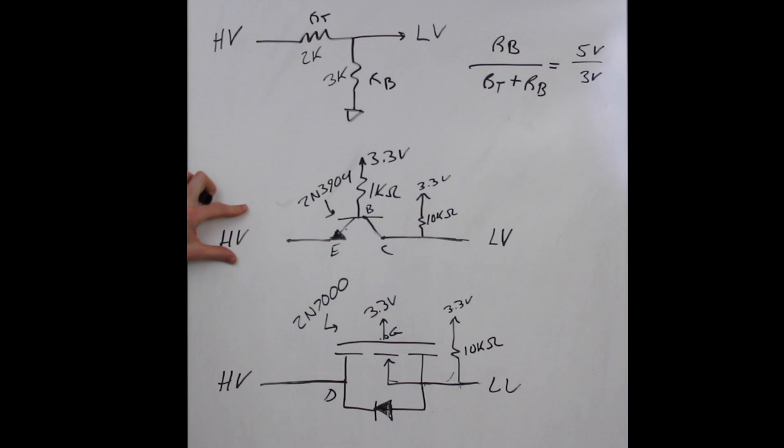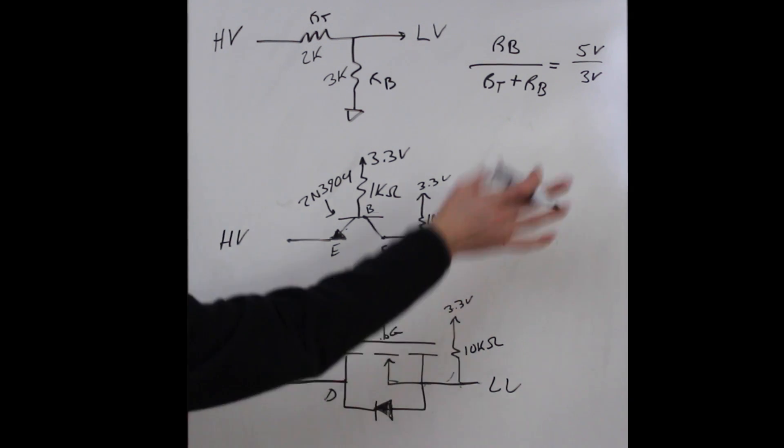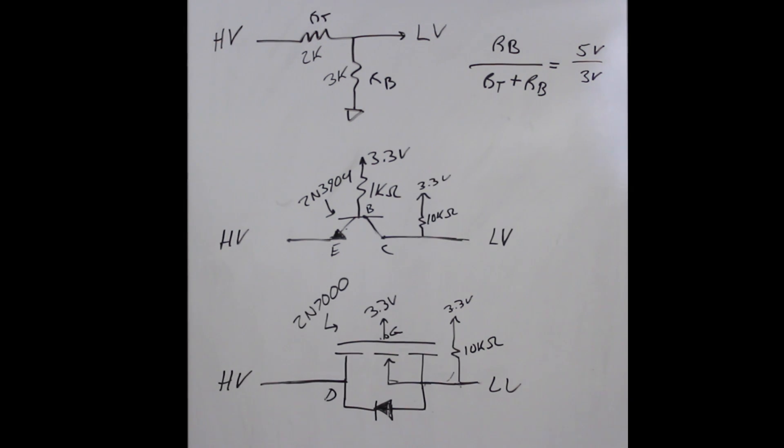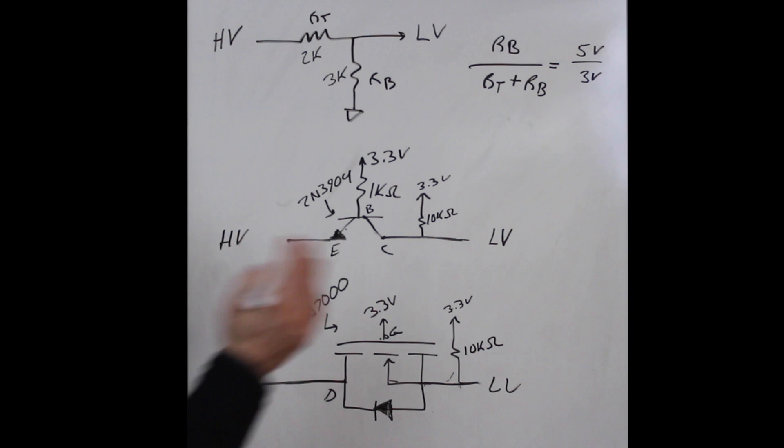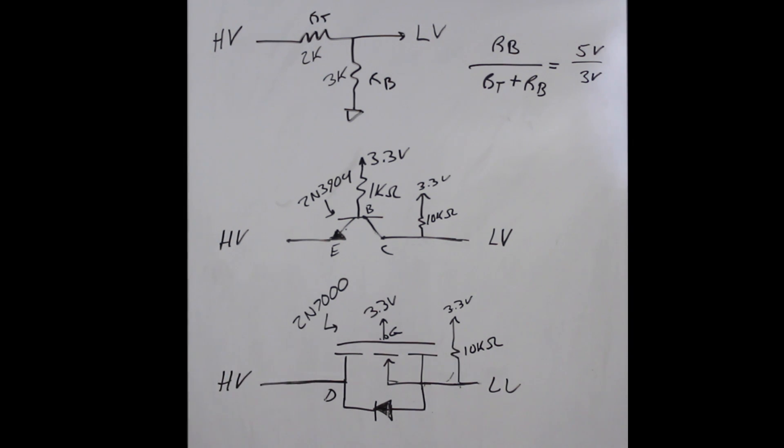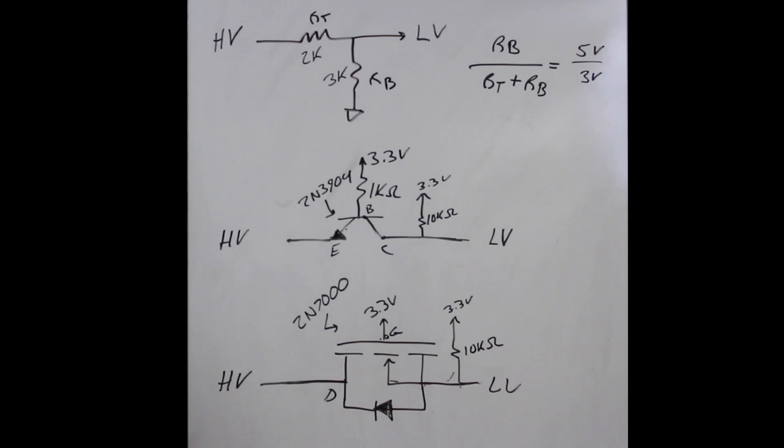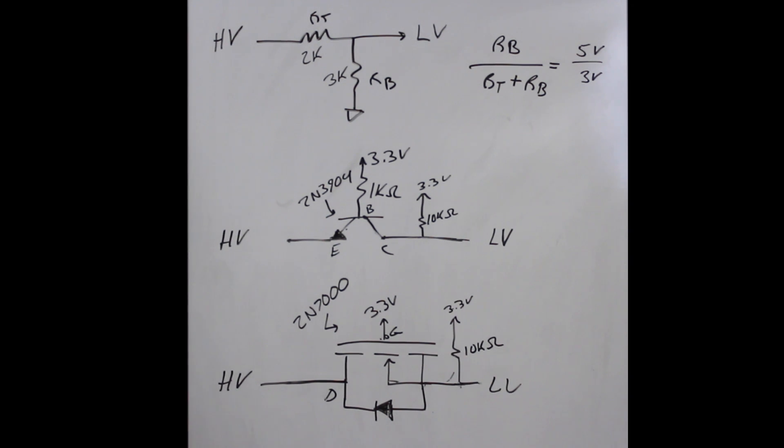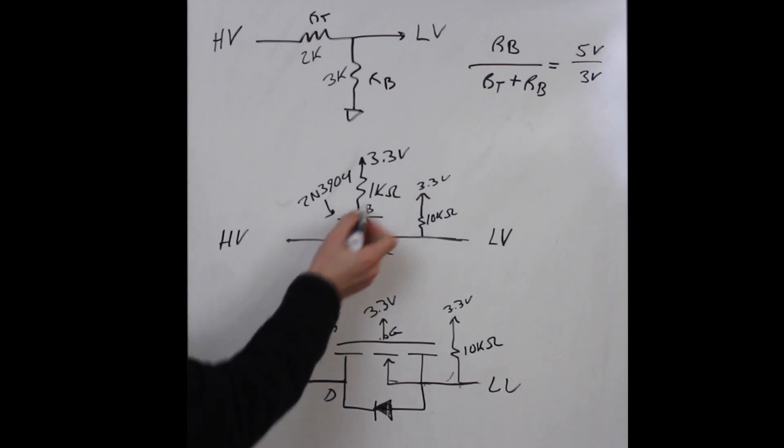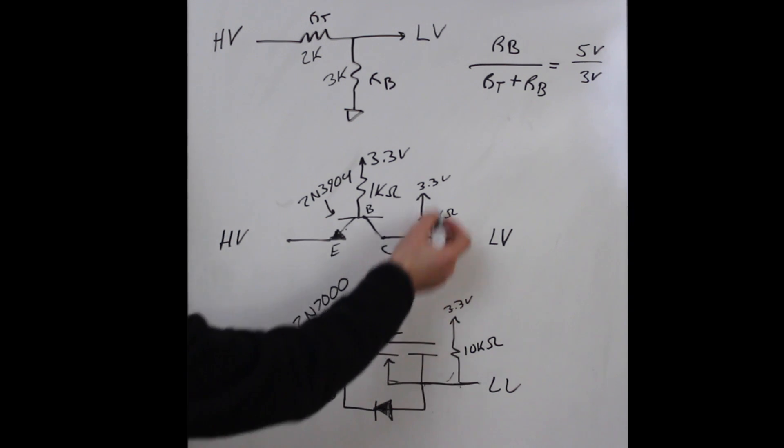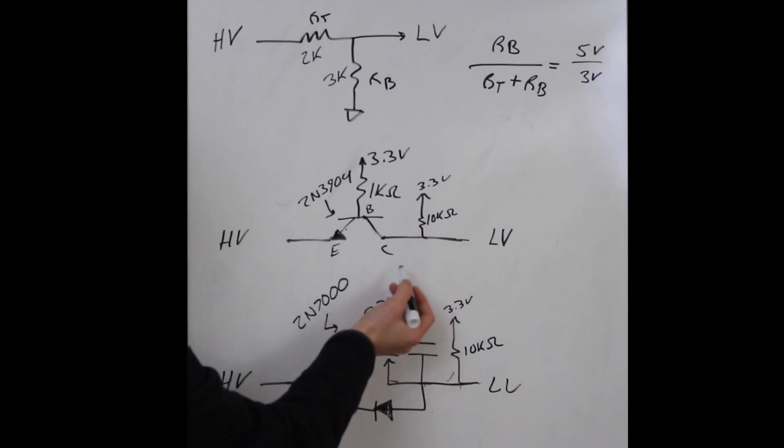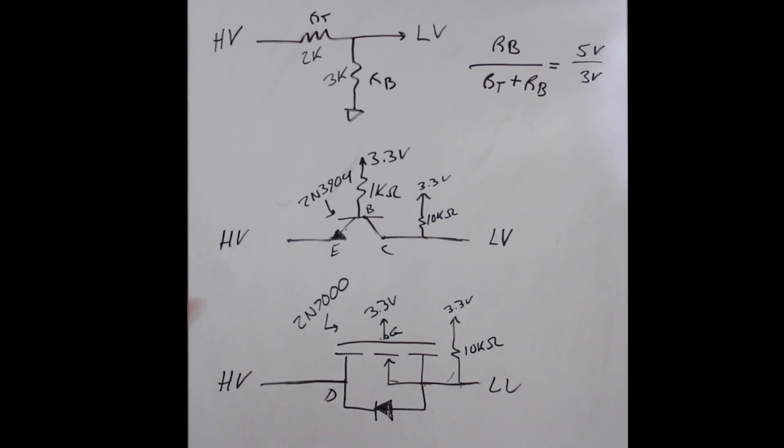We connect the low voltage side directly to the collector, high voltage side connects directly to the emitter. Let's say we're going from high voltage to low voltage, shifting down.